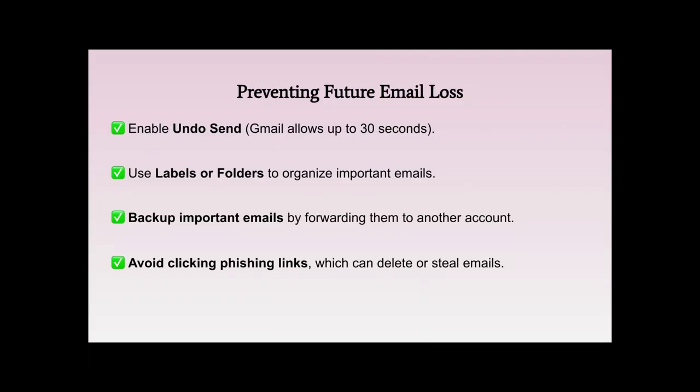Preventing future email loss: you can enable Undo Send — Gmail allows up to 30 seconds to undo a send. You can use labels or folders to organize important emails, such as separate folders for school work and personal items, to keep track of what's important. You can also back up important emails by forwarding them to another account or an alternative email dedicated only to important messages so they don't get lost in junk or spam. Lastly, avoid clicking phishing links, which can delete or steal emails.